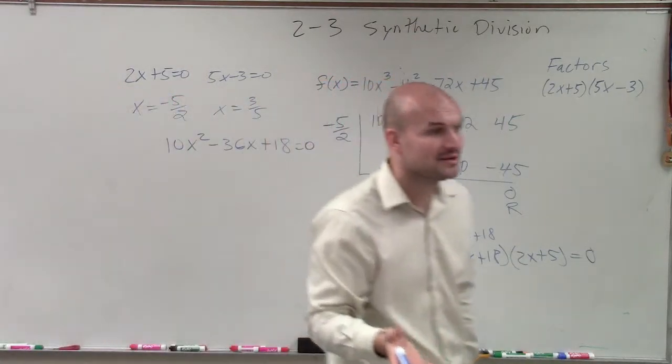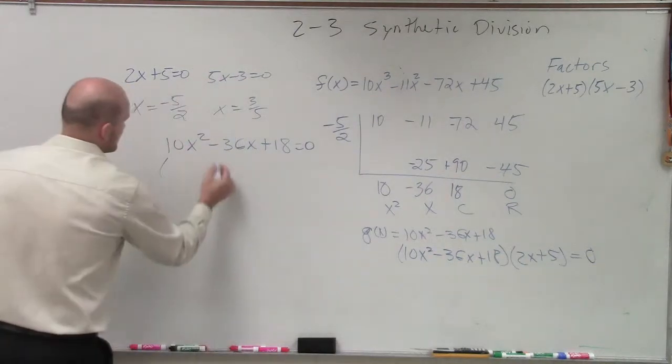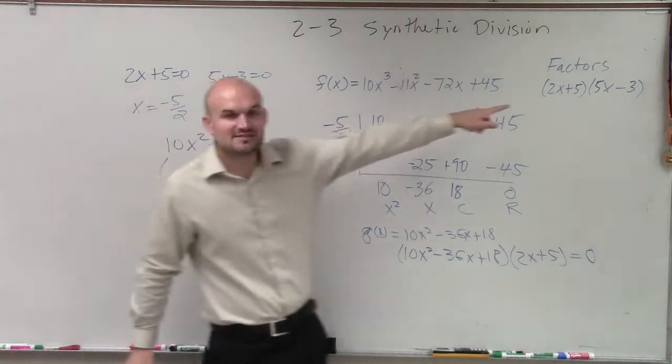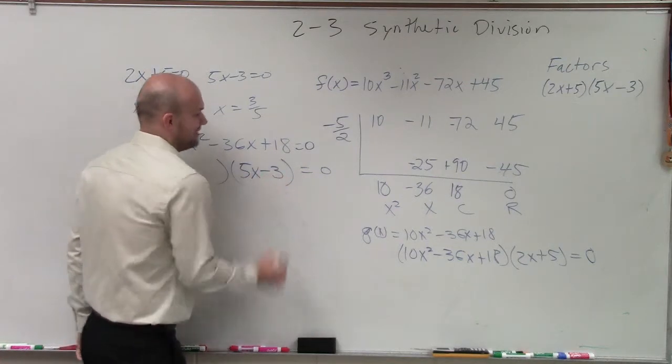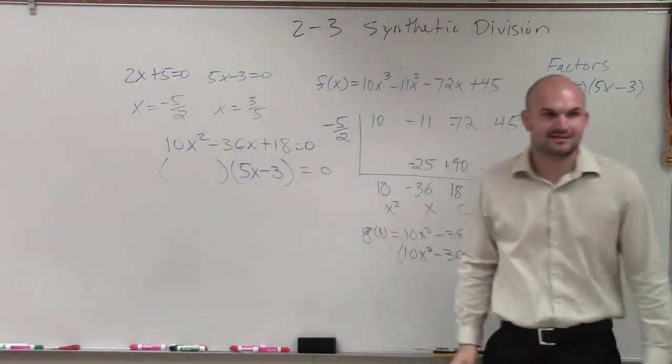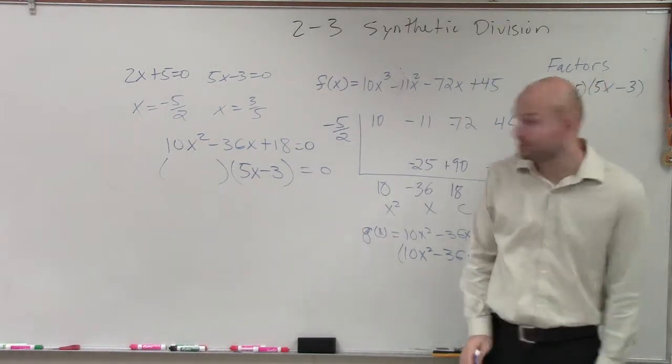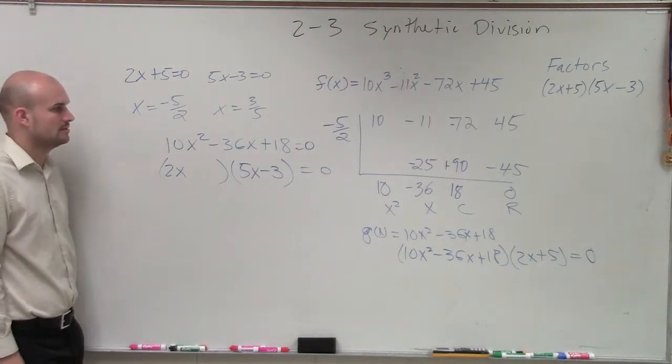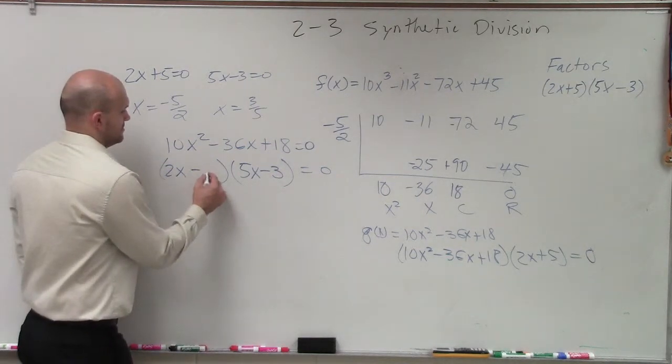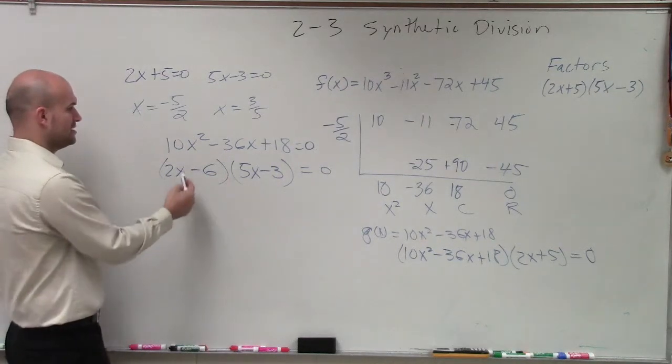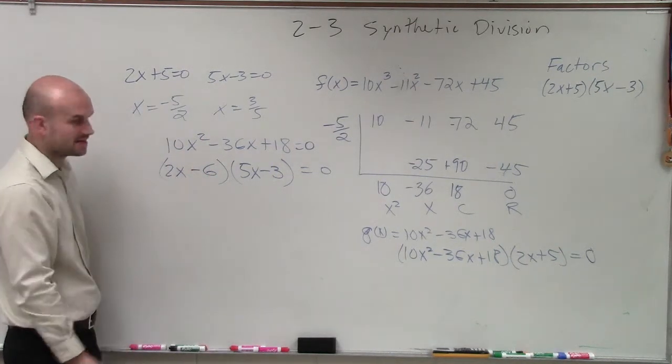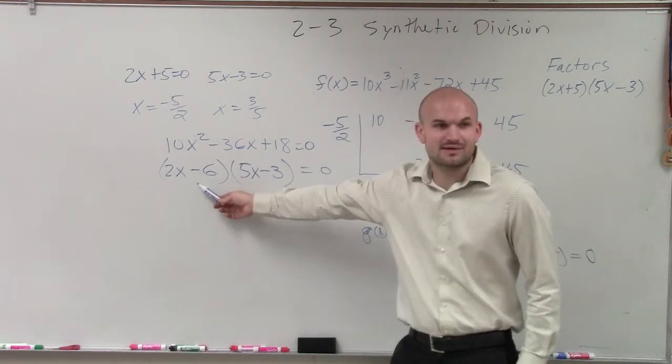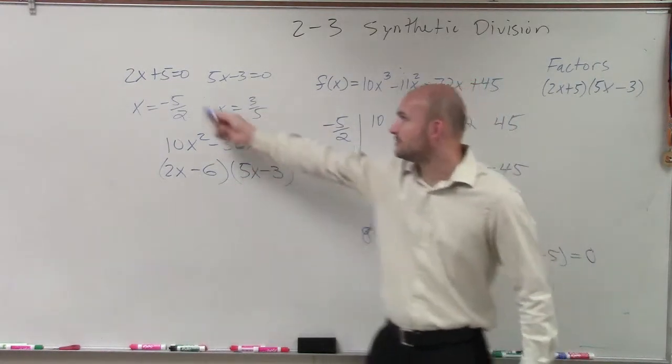And what's helpful about this problem is they already gave us one factor. We know we can factor this. And guess what? They gave us a hint. They already gave us one factor, 5x minus 3. So then pretty much what I need to do is say 5x minus 3 times what gives me that? We know that has to be 2x, and then it would have to be negative 3 times negative 6. Let's just double check that. This becomes negative 6, negative 36x. So therefore, ladies and gentlemen, now I've found my last factor.